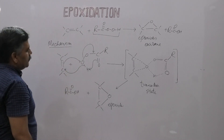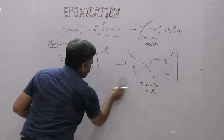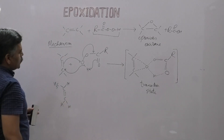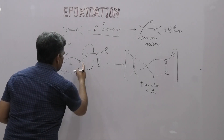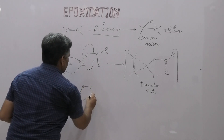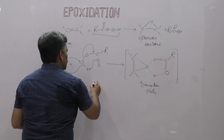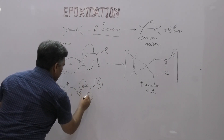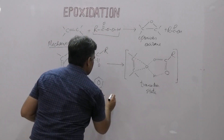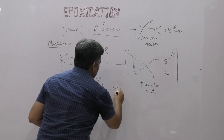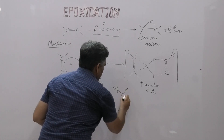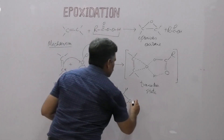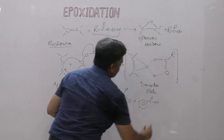For example, if our reactant is propene — CH2=CH-CH3 — it reacts with a peroxy acid such as peroxy benzoic acid (where R is benzene). The pi electrons attack the oxygen and we get propylene oxide, a substituted epoxide with one methyl group, along with the formation of benzoic acid as a by-product.